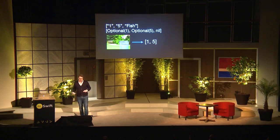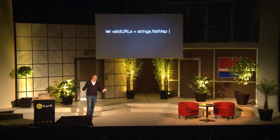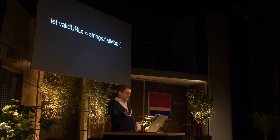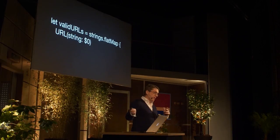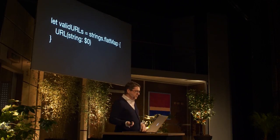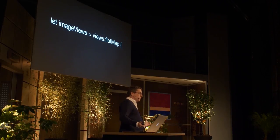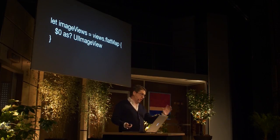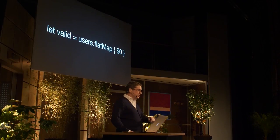So any time you have failable initializers, you should be thinking flat map. For example, got an array of strings that might be URLs — let's try and make URLs out of them. If flat map fails, it tosses them away. You've got an array of UIViews, some of which might be UIImageViews — just do a conditional typecast and the ones you get back are image views. You can even just do this with no transformation at all — just say please give me your lovely compacting behavior: unwrap optionals and toss away the nils. That's flat map.